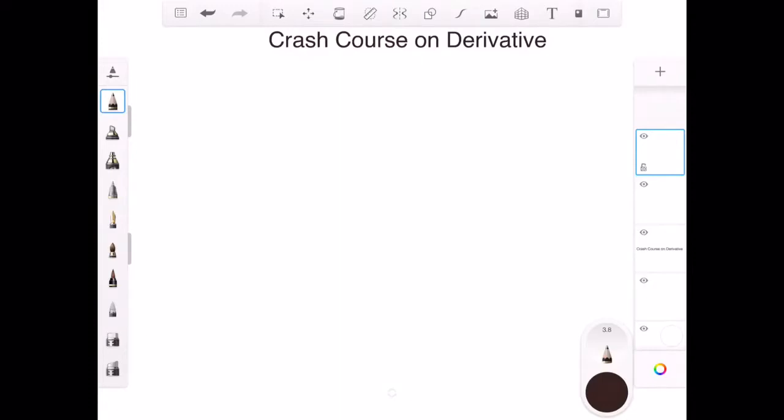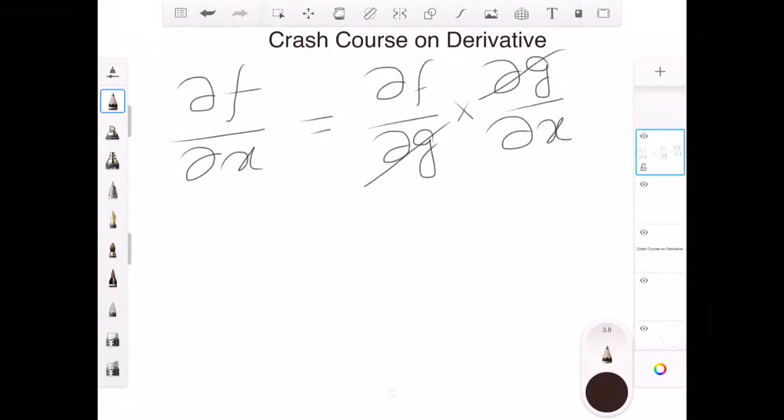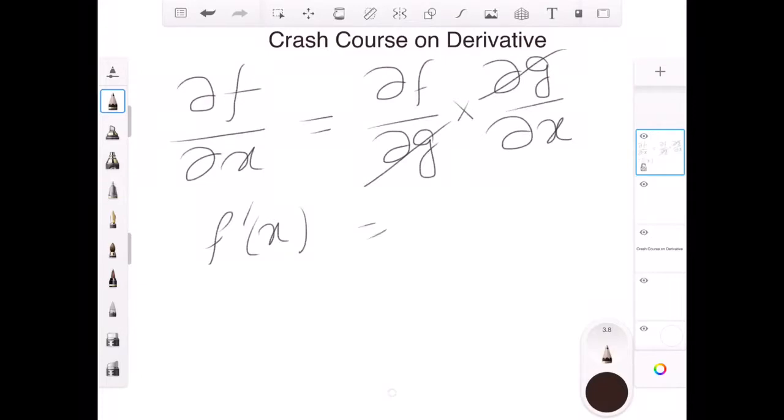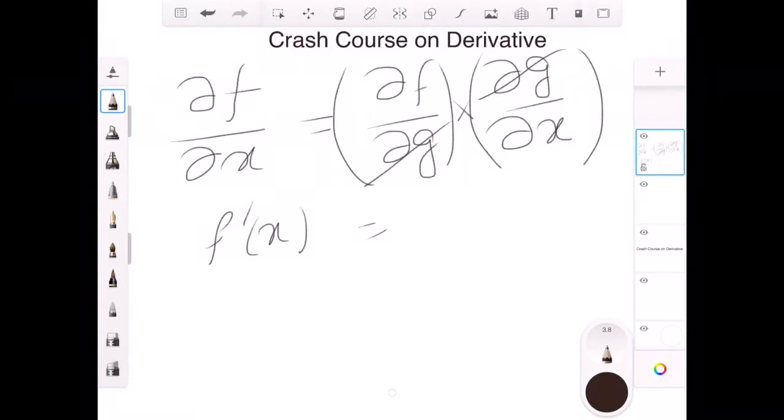If you want to see the change in function given by x, it can be written as the change in function because of another function times the change in that function divided by x. This and this cancel. df dx is nothing but your f prime x. What I'm doing is taking the derivative with respect to g, another function, and the derivative of g with respect to x, and eventually it gives me the derivative of f with respect to x.